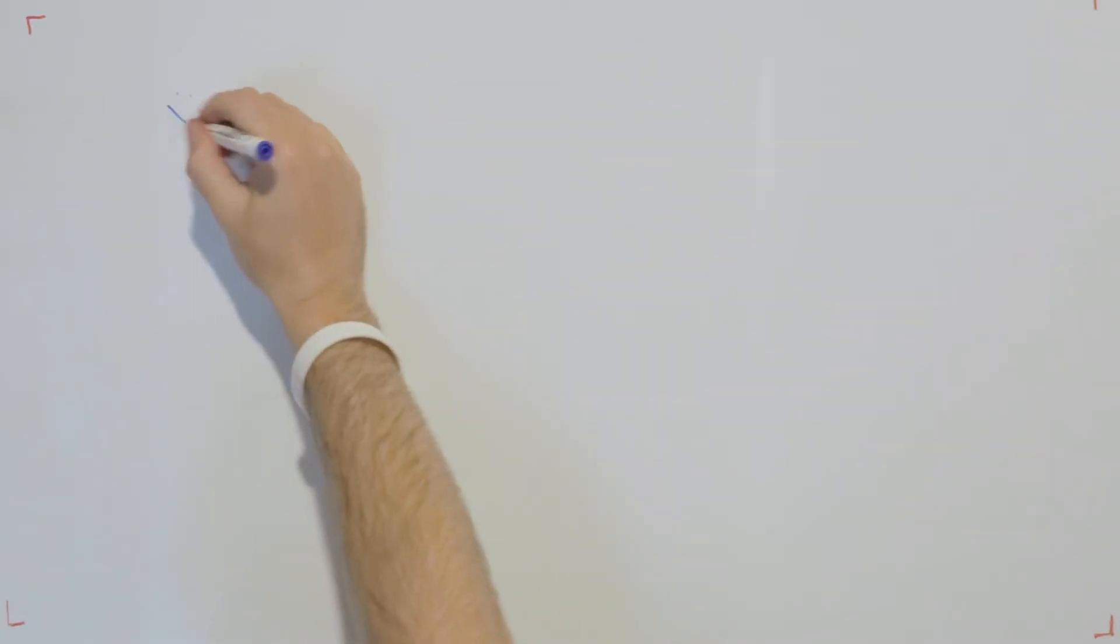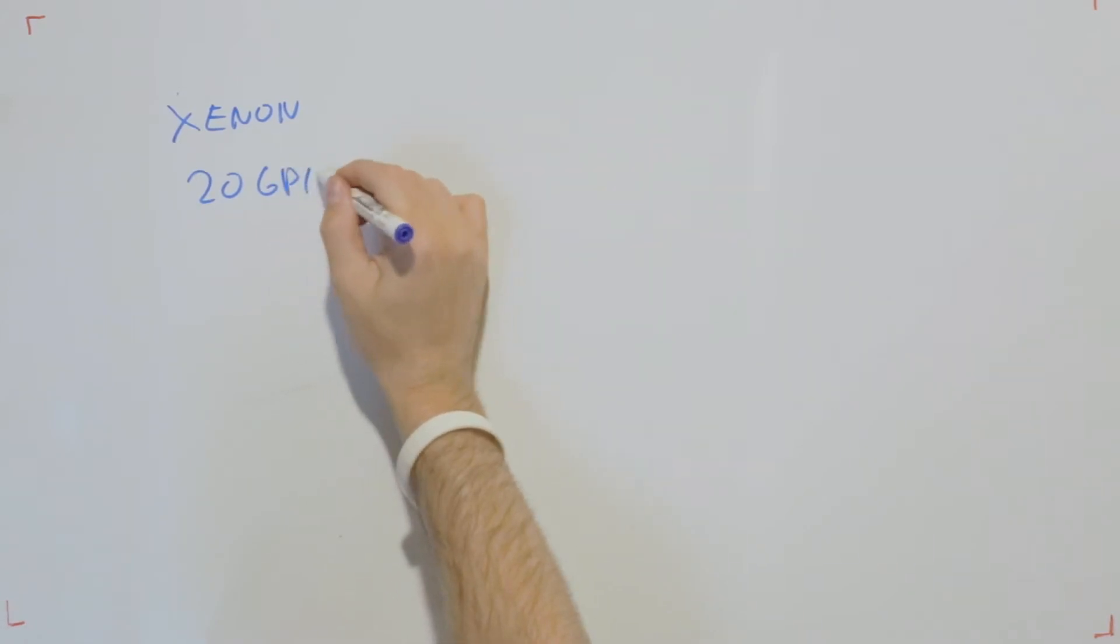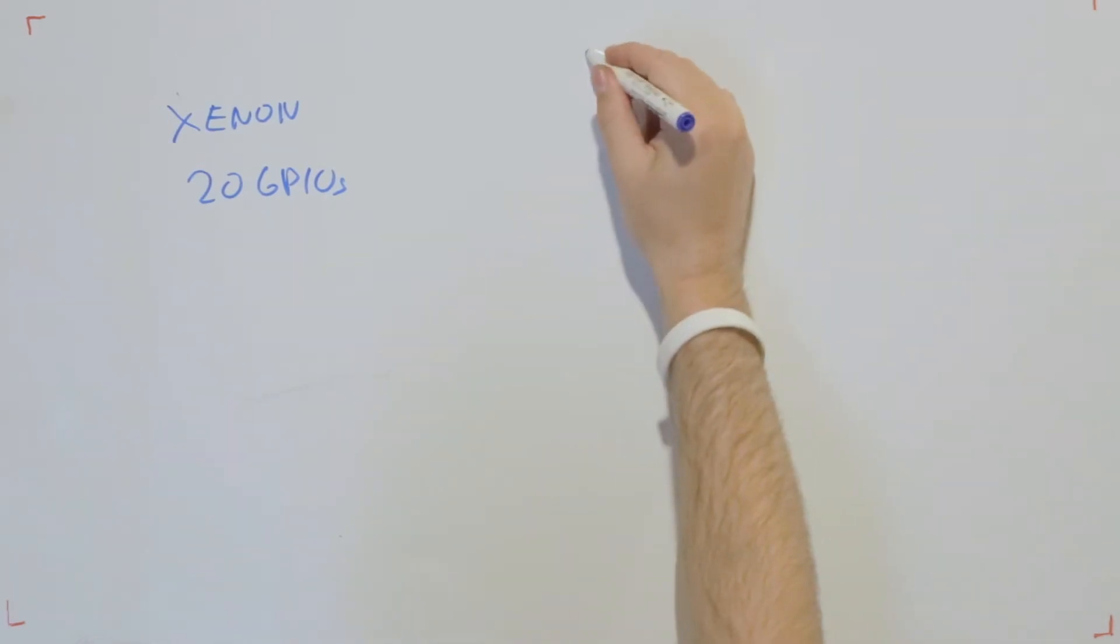So the math is: Xenon has only 20 GPIOs. But for all our peripherals we need I2S, those are three pins.